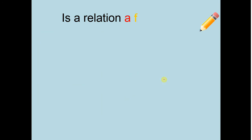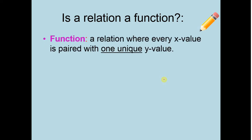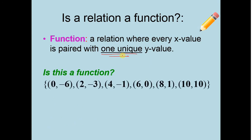So the question we've got to answer is, is this relation a function? Now, just a reminder what a function means. A function is a relation where every x value is paired with one unique y value. Very important. One unique. So that means every x can only have one y attached to it. I can't have one x going to two different y's. So we need to ask ourselves, is this a function?